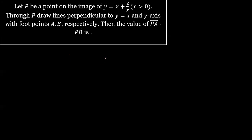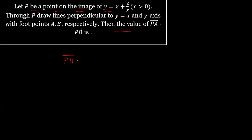Hello guys. In this video we will solve this problem. In the problem it is given that let P be a point on the image of y = x + 2/x, and through P we draw a line perpendicular to y = x and to the y-axis with foot points A and B respectively. We have to find the value of the dot product of vector PA and vector PB.